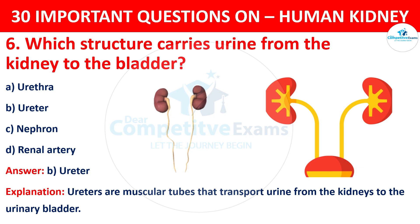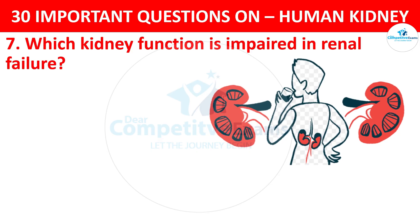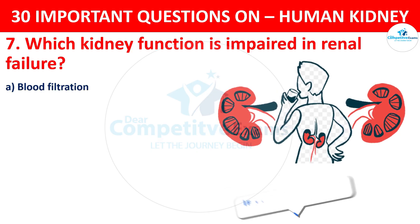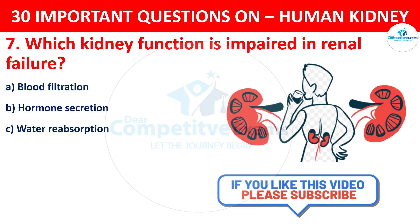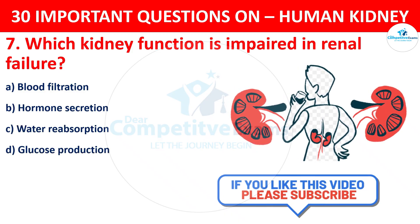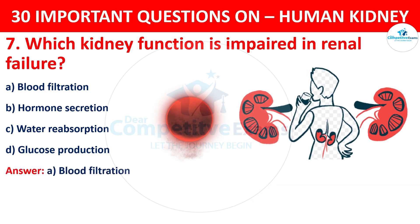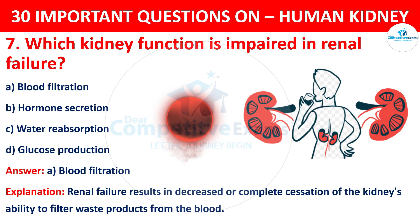Question 7. Which kidney function is impaired in renal failure? The options are: Blood Filtration, Hormone Secretion, Water Reabsorption, or Glucose Production. The correct answer is A, i.e. Blood Filtration. Renal failure results in decreased or complete cessation of the kidney's ability to filter waste products from the blood.